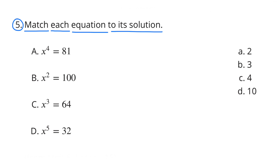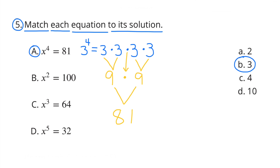Number 5: Match each equation to its solution. Part A: X to the fourth power equals 81. I selected B, or 3. 3 to the fourth power is 3 times 3 times 3 times 3, which is the same thing as 9 times 9, or 81.